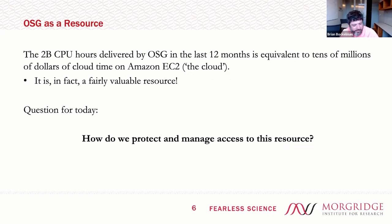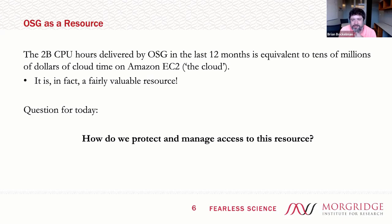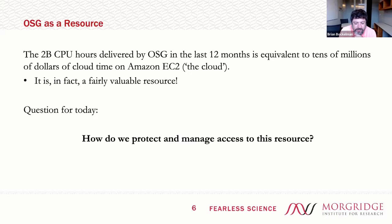So, 2 billion CPU hours — even though we like to say cores are cheap and plentiful, 2 billion CPU hours is a pretty valuable resource. If you converted it to cloud time on EC2 at sticker prices, you're looking at tens of millions of dollars of cloud time. So the question I want to ask for today is: how do we protect and manage access to this resource? How do we control authorization and decide what is allowed to utilize the compute or storage within the OSG?